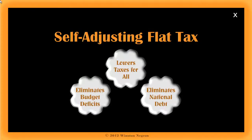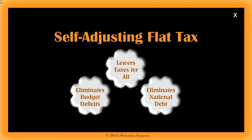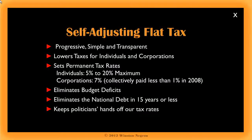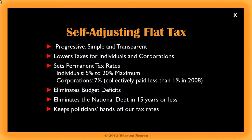Everyone complains that our system of taxation is unfair and inefficient — taxes are too high for some and too low for others. The Self-Adjusting Flat Tax, or SAFT, was created to level the playing field. Our model is progressive, simple, and transparent. It lowers taxes for individuals and corporations, sets permanent tax rates of 5% to 20% maximum for individuals and 7% for corporations, eliminates budget deficits, and eliminates the national debt in about 15 years or less depending on the level of unemployment. Very importantly, it keeps politicians' hands off tax rates.